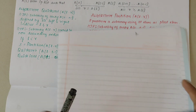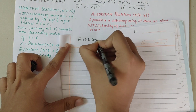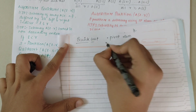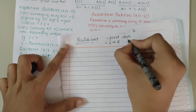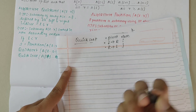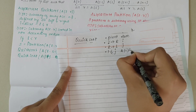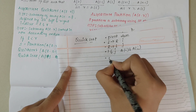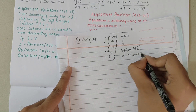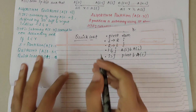Before proceeding, here are certain points to remember in QuickSort: first, we make use of a pivot element; second, left-to-right scanning happens for i; third, right-to-left scanning happens for j; fourth, when i and j crisscross, we exchange a[i] and a[j]; and finally, if i is greater than j, we exchange the pivot and a[j].